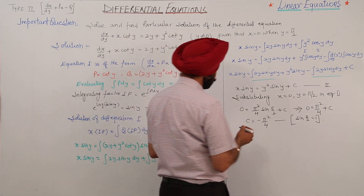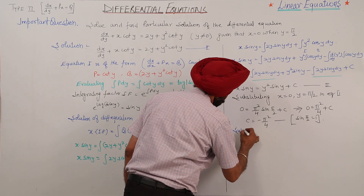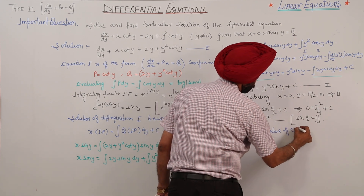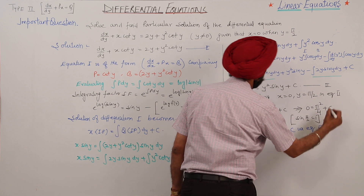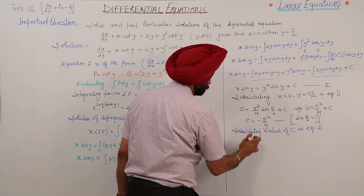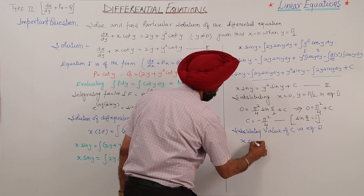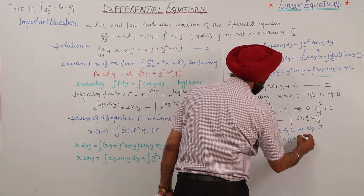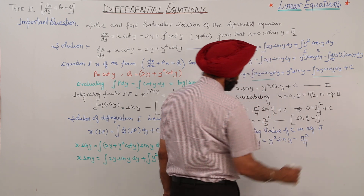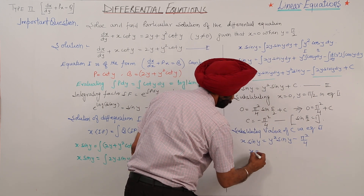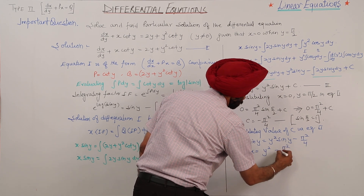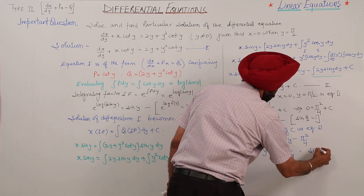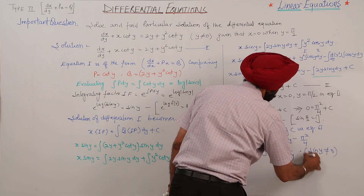Substituting the value of C back into equation 2, we get x sin y equals y squared sin y minus π²/4. Therefore x equals y squared minus π²/4 divided by sin y, where sin y is not equal to 0. This is the final answer.